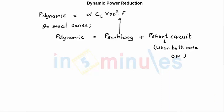In the previous clip we have already seen that dynamic power equals alpha, which is the switching activity factor, multiplied by the load capacitance CL, VDD squared, and frequency. We found this value over a time interval T. In real sense this is not the complete dynamic power — this is the switching power — because dynamic power constitutes of two parts: switching power and short circuit power.